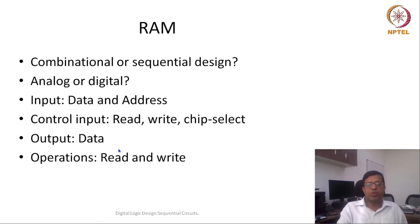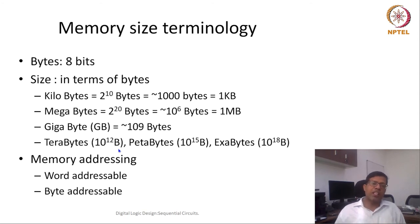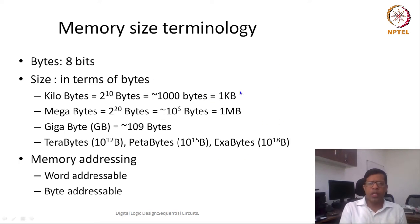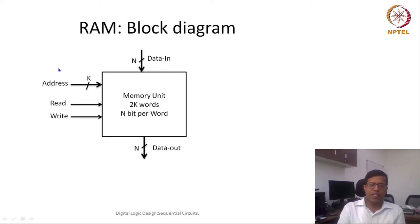The two operations you perform on memory are read and write. Another characteristic is size — memory is characterized by how much content it can store, typically measured in bytes. Bytes is written with a capital B in short form; bits are written with a small b. So 1 KB means one kilobyte, while 1 Kb means one kilobit. One byte has 8 bits.